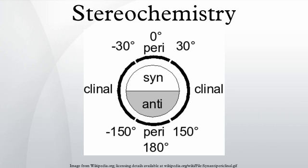Torsional strain results from resistance to twisting about a bond. Types of stereoisomerism include: atropisomerism, cis-trans isomerism, conformational isomerism, diastereomers, enantiomers, and rotamers.